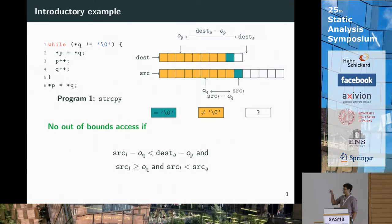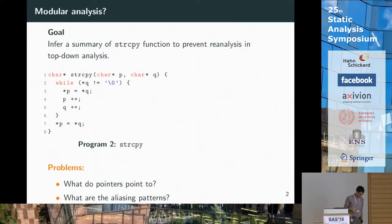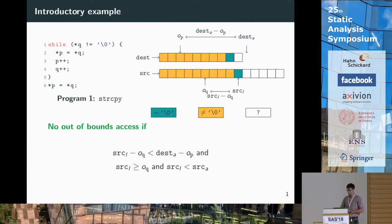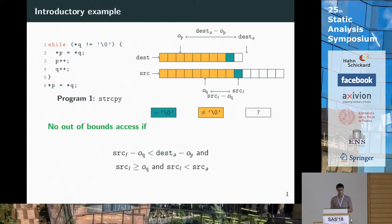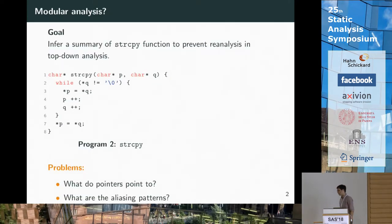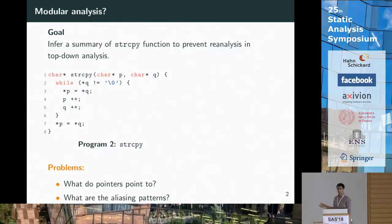Those values are shown in the picture on the top left, and there are also values describing the offsets of pointers P and Q, which are OP and OQ. If we can prove some simple linear constraints on those variables written at the bottom, then we are sure there won't be any out-of-bound accesses. We want to scale on larger programs and infer summaries for functions such as strcopy, because it will be called at different call sites. It's important to note that tracking string length and allocated buffer size was already known to be important, but in previous work by Nuredor and Xavier Lemijon the strcopy semantics were hard-coded in the analyzer, whereas here we want to infer a summary for this function and reuse it for further analysis.